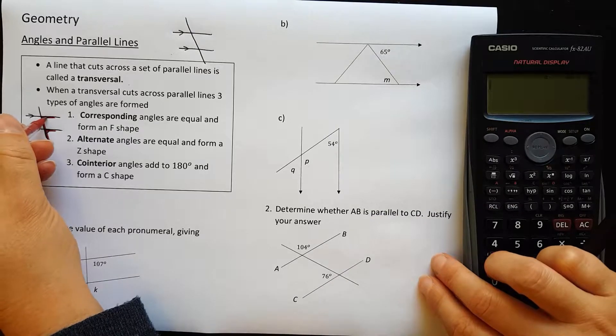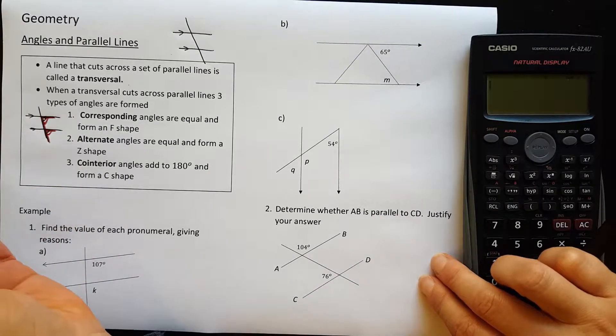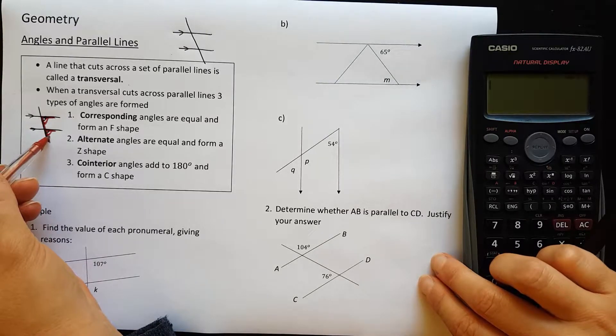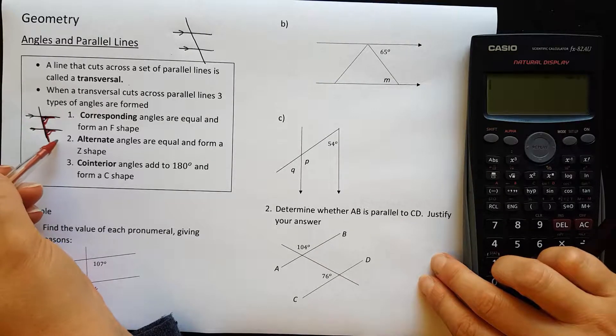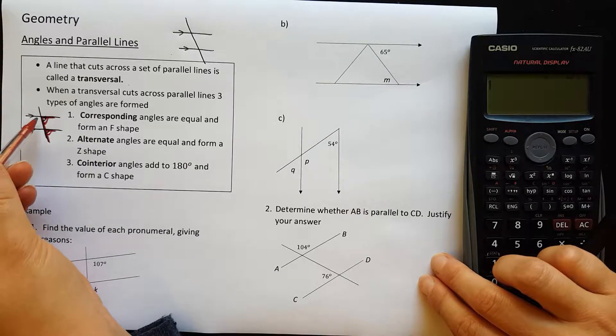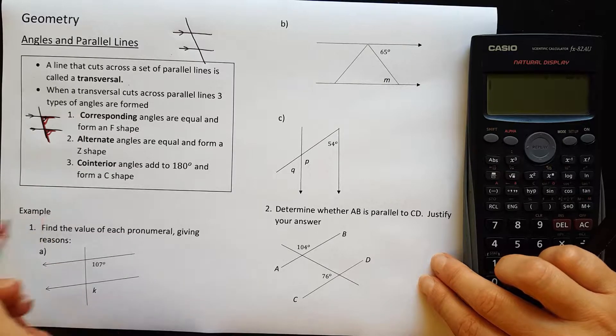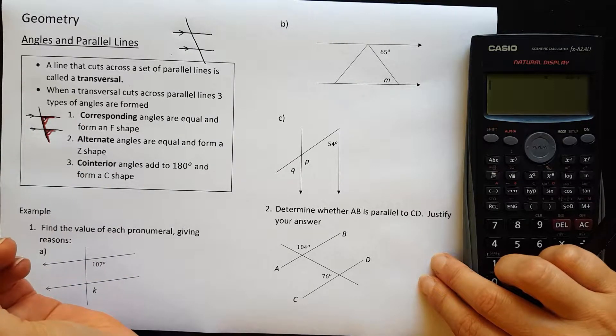Now the angles underneath there are equal angles because they're corresponding. But the F doesn't always have to be a normal F like this. It could be an upside down F and it could be a back to front F, so it could be on the back side of here as well. So an F any way that you rotate it or flip it is corresponding angles.